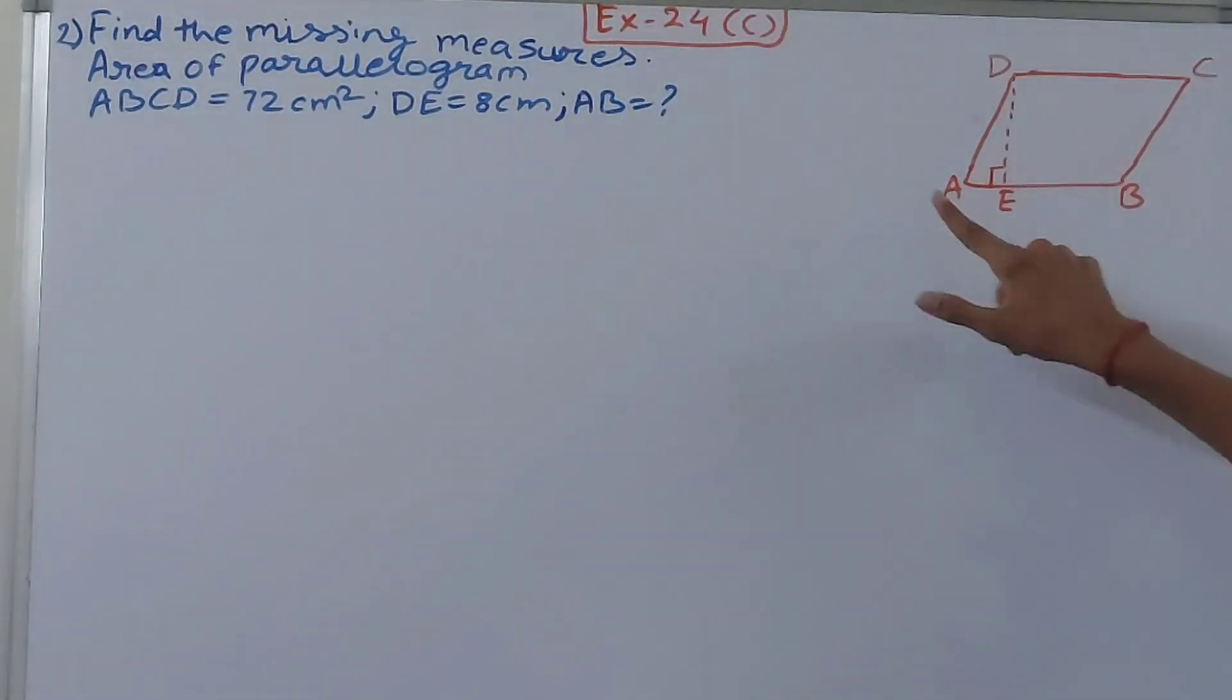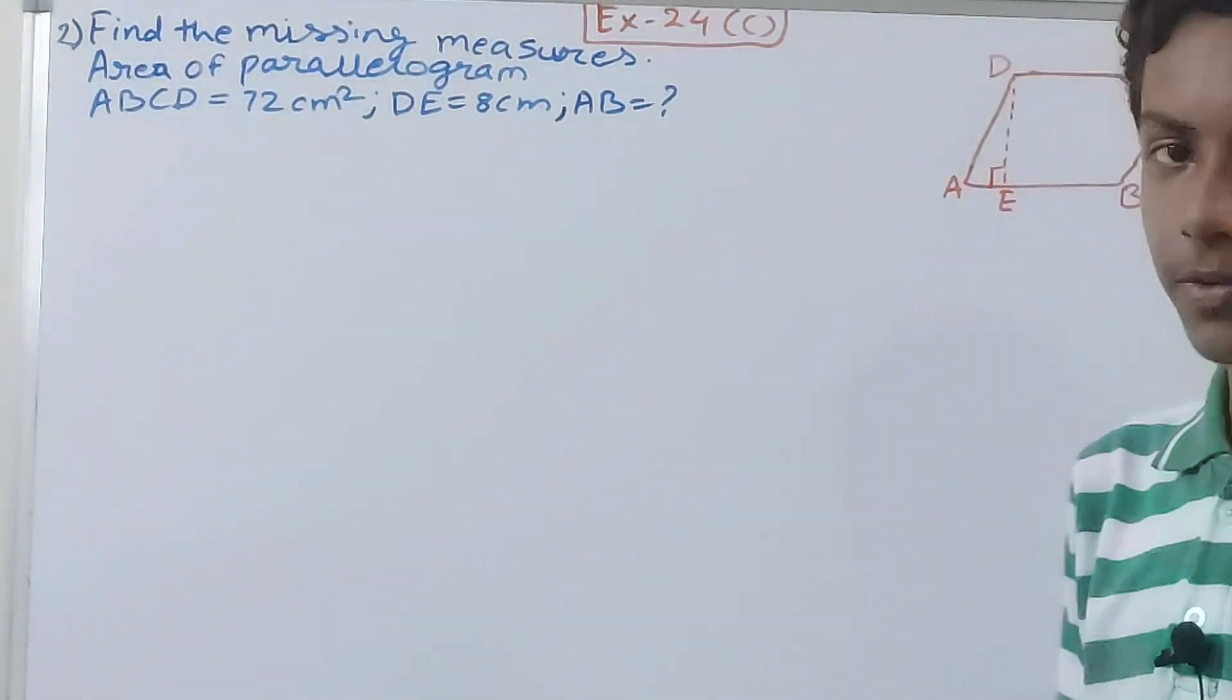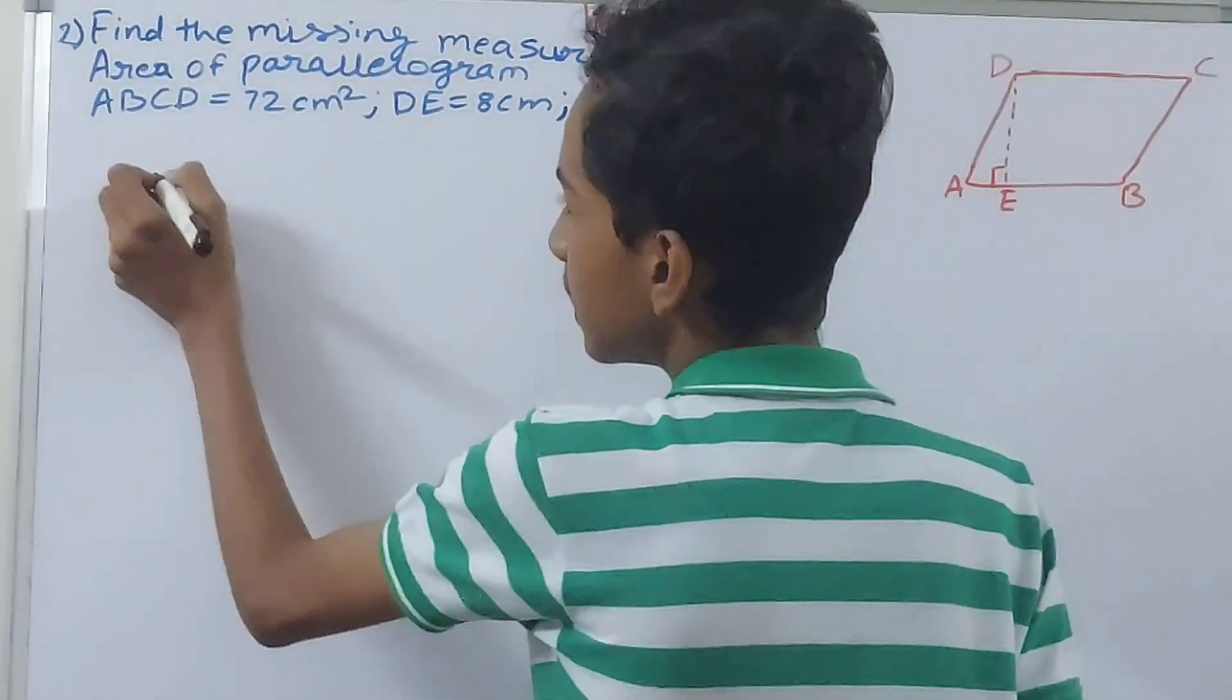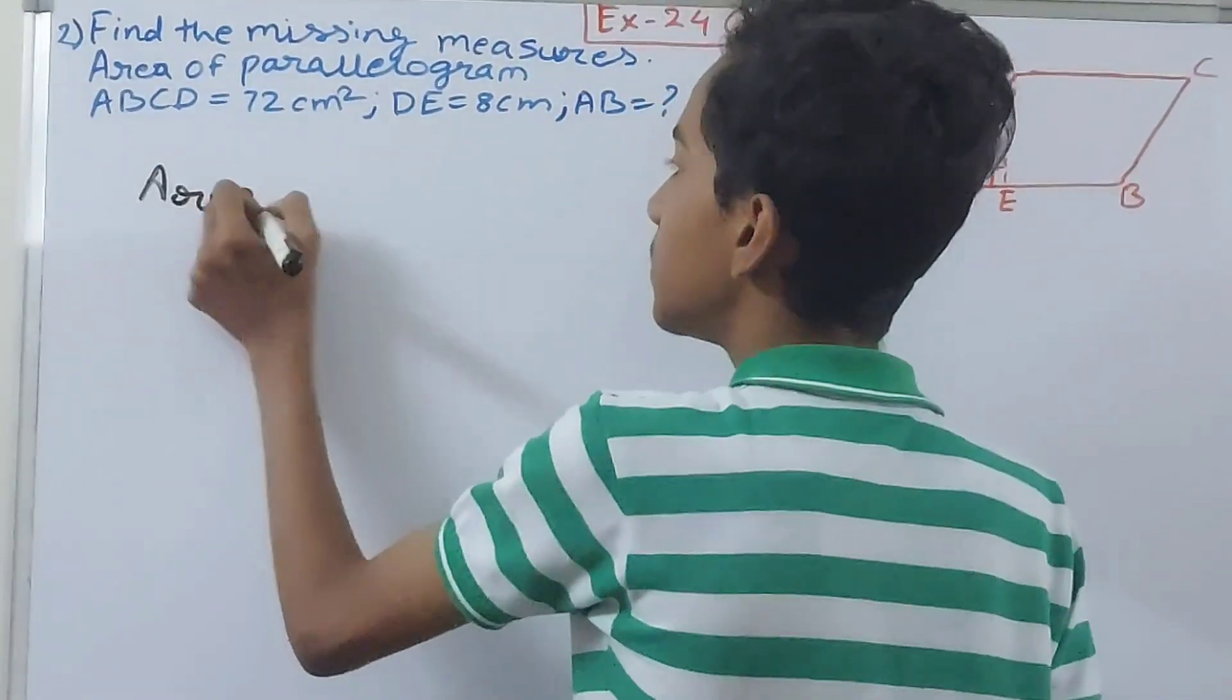And AB is this length, so it is not given, we have to find it out. So what are the things given in the question? First is the area, that is 72 square centimeters.